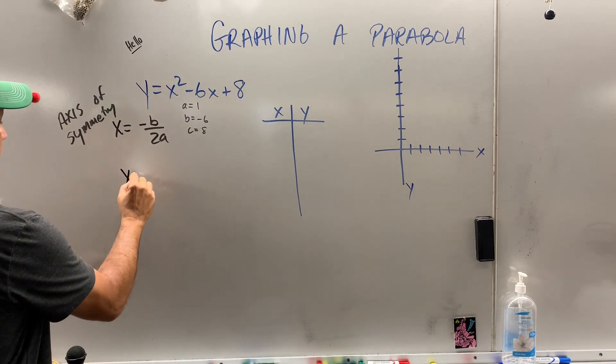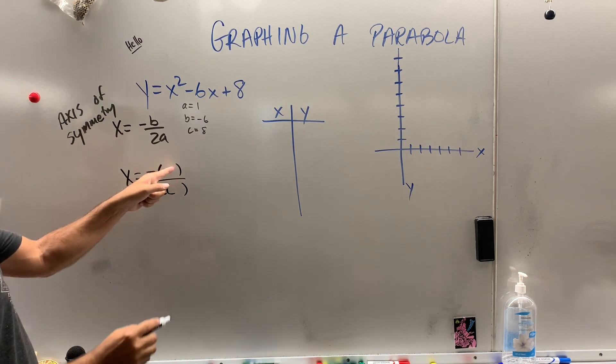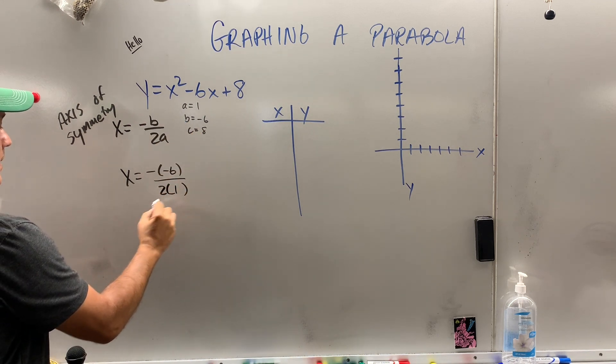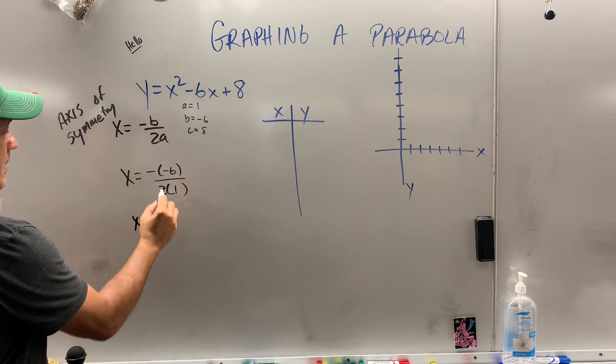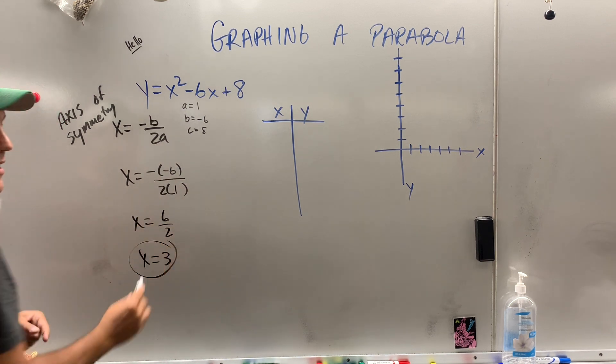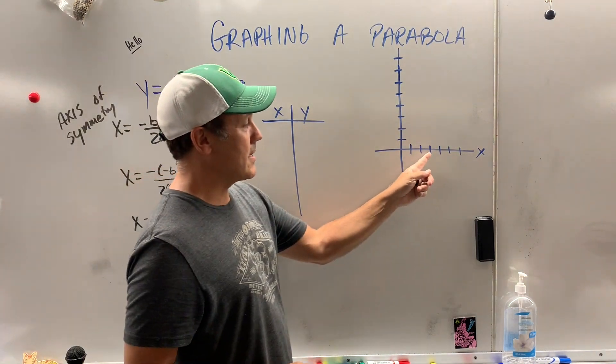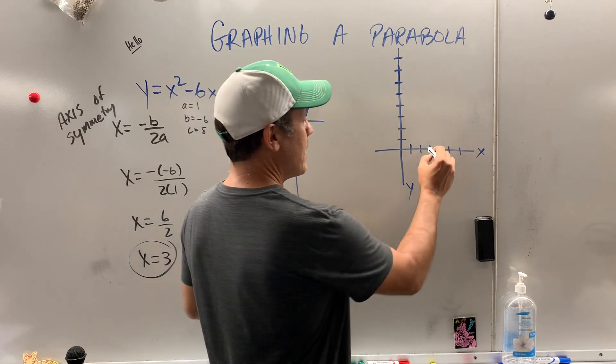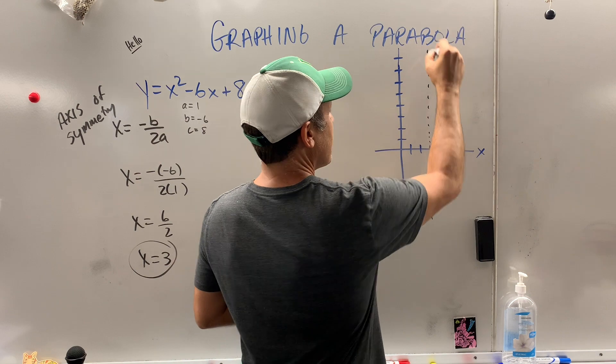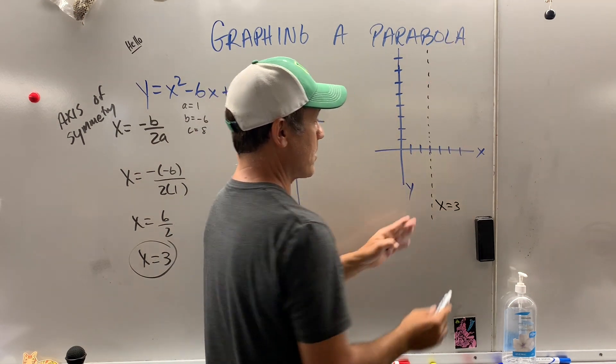So, the key is put things in parentheses over 2a. What is my b value? Negative 6, and what is my a value? 1. So, x equals 2 negatives make a positive, so x equals 3. That is the axis of symmetry. It's an equation of a line. Well, where does x equal 3? Right here. So, it's a little dotted line that goes through, so right here, this is the equation, x equals 3.